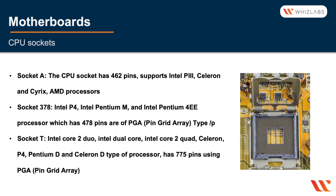There are different types of CPU sockets, so when choosing a motherboard you need to ensure it matches the processor you plan to use. A motherboard made for Intel processors will not support AMD and vice versa. Even within Intel, you need to confirm the specific processor, its pin count, and socket type to get the correct motherboard.